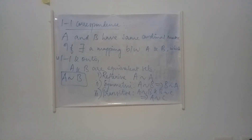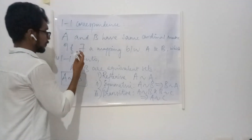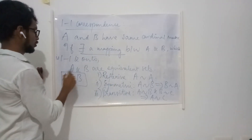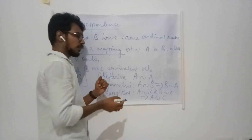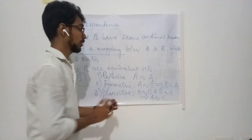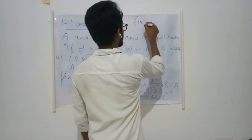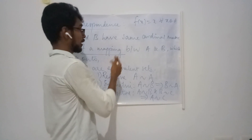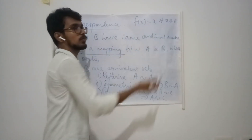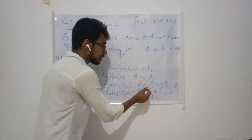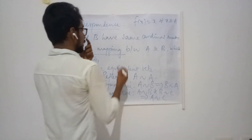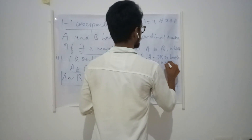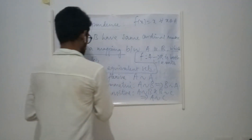Here we are not talking about the uniqueness of the mapping, only its existence. A and B are equivalent sets. For the reflexive property, if we define f(x) = x for all x in A, this mapping is both one-to-one and onto. So there exists a mapping between A and A which is both one-to-one and onto, therefore A is related to A.